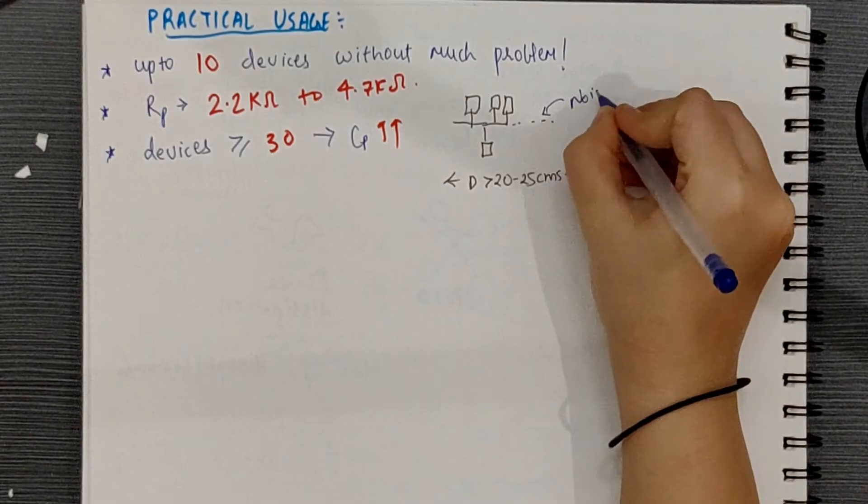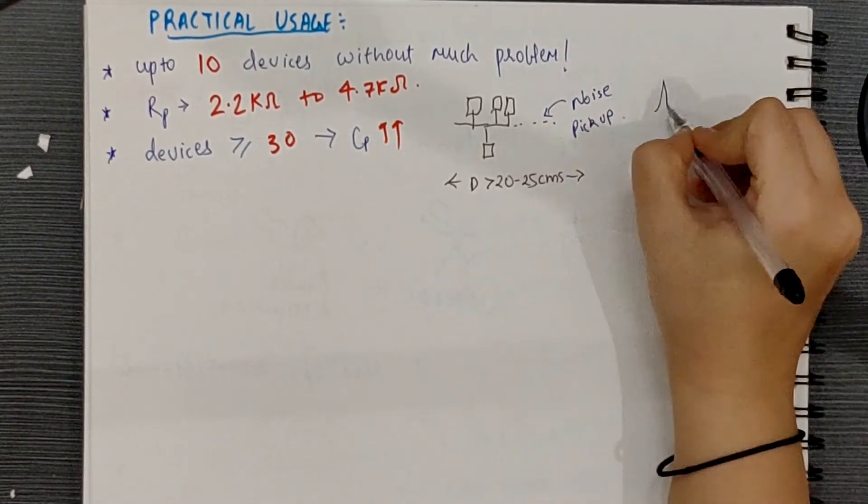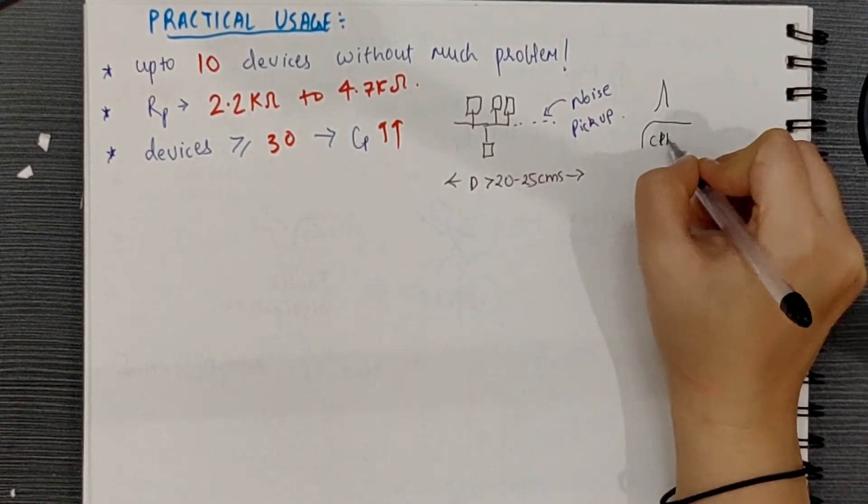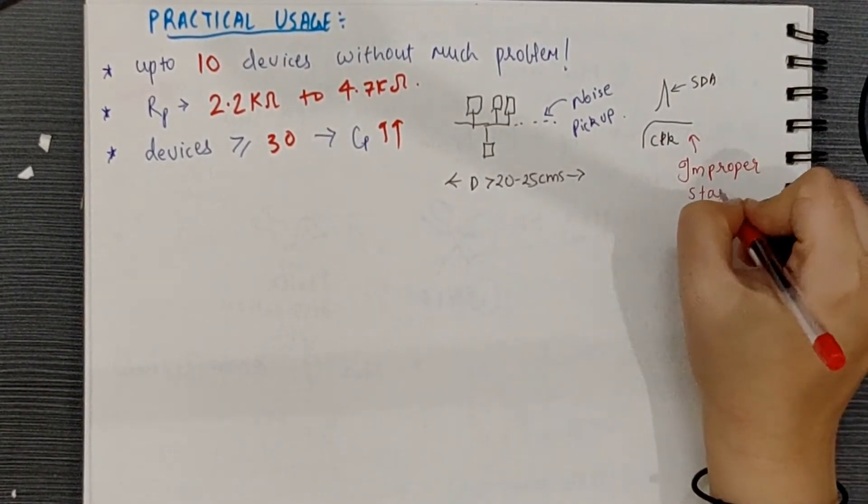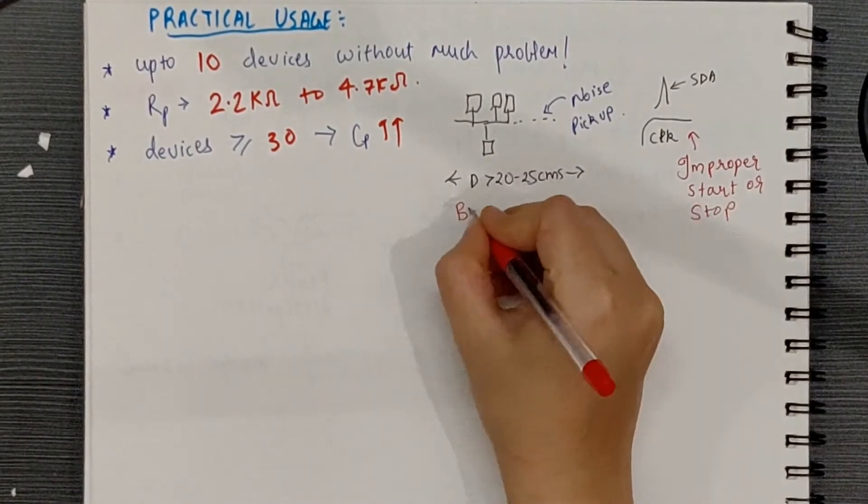And noisy I2C buses causes a spike on the data line when the clock is high, and this can cause the devices to see an improper start or stop condition. This confuses the device and may cause the bus to hang.